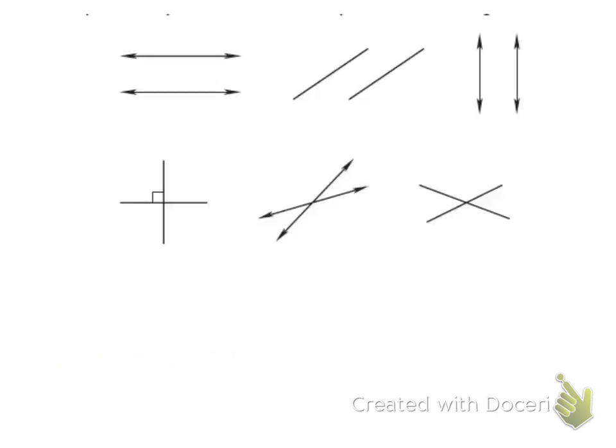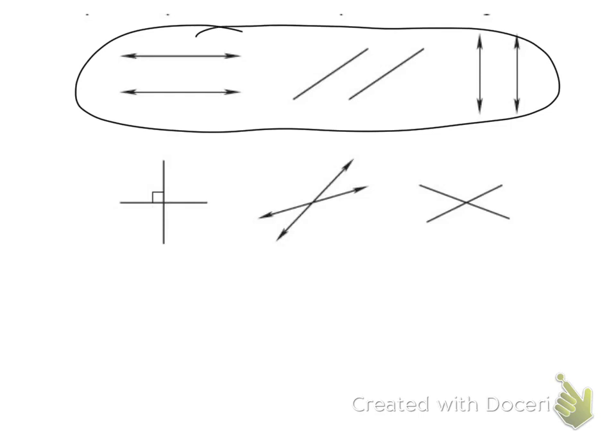When lines cross, we say that they intersect. If we draw true straight lines on the same flat surface, then those lines either intersect at some point or they don't intersect at all. Lines that go in the same direction and do not intersect are called parallel lines.